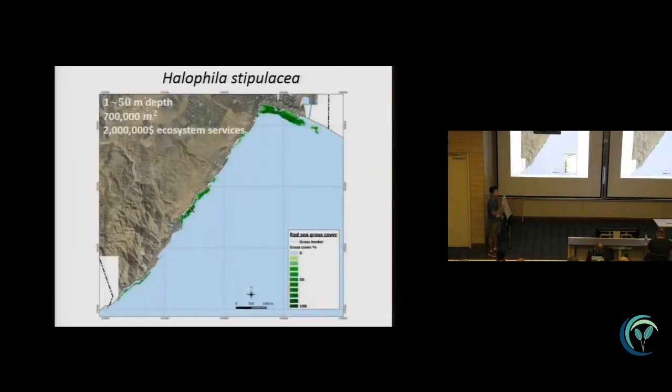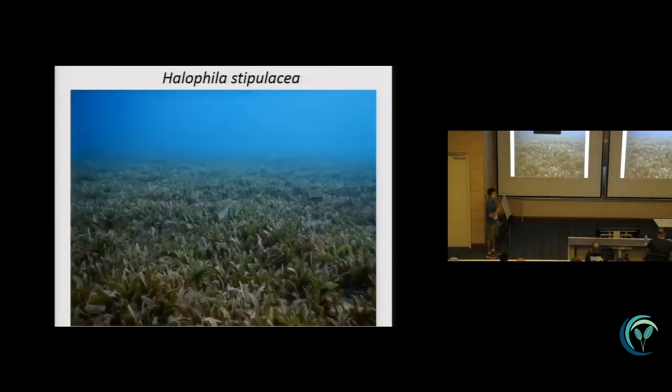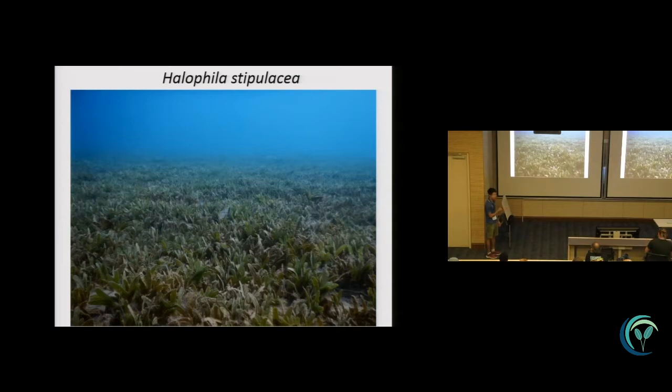Here is how we can find the Halophila in the Gulf of Eilat, when the Halophila forms an intensive meadow in intertidal zones along the Israeli coastal area. If we go by in very shallow water, we can see the meadow from something like this.